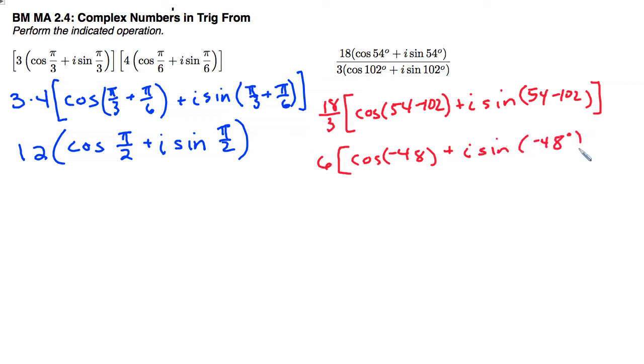Now we do have a slight problem here, is that our angle is negative, and we do want that to be a positive angle. So I'm just going to simply add 360 to bring it down all the way around into the positive. So I have 6 cosine 312 degrees, plus i sine of 312 degrees.